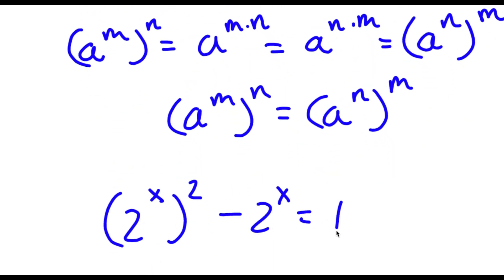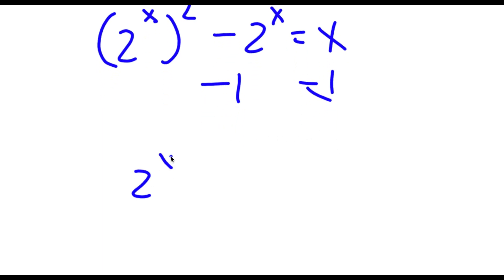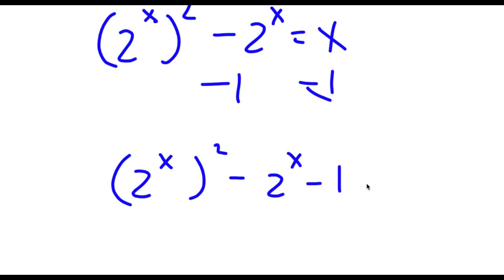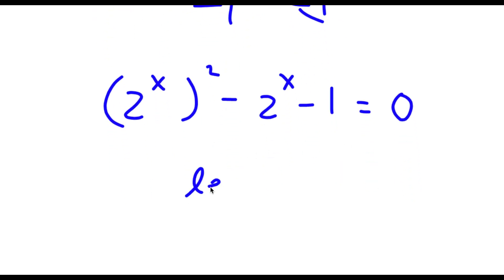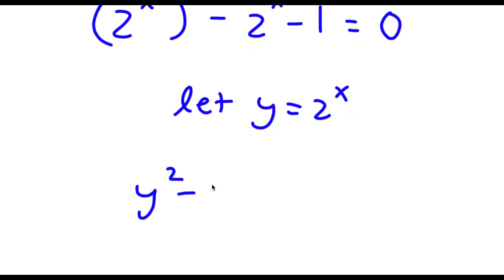So now I have 2 to the power of x to the power of 2 minus 2 to the power of x is equal to 1. Subtracting 1 from both sides gives 2 to the power of x to the power of 2 minus 2 to the power of x minus 1 is equal to 0. Now I'm going to let y equal 2 to the power of x, so I have y squared minus y minus 1 is equal to 0.